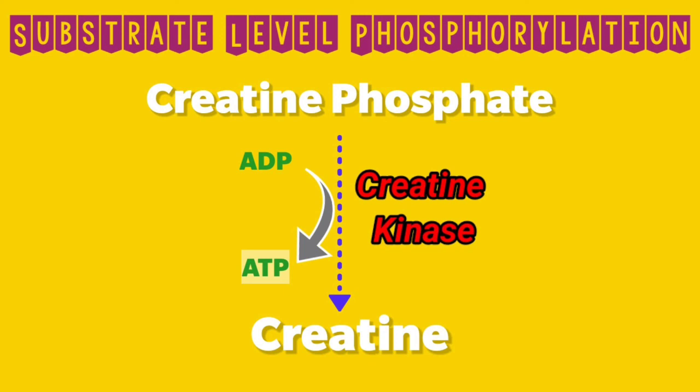This covers substrate level phosphorylation, which is the minor source of ATP. The details of the major source, oxidative phosphorylation, will be discussed in a separate video. Thank you for watching — please subscribe, like, and share.